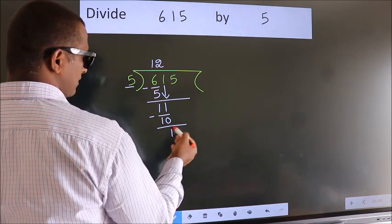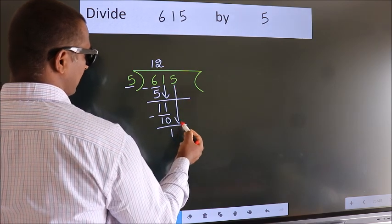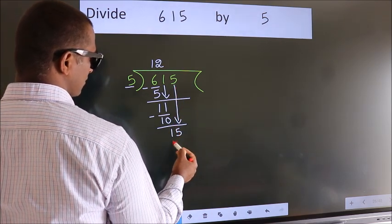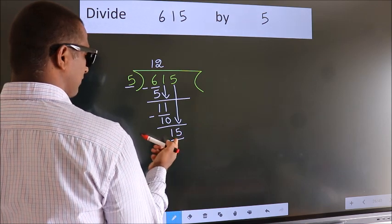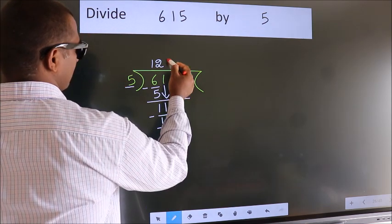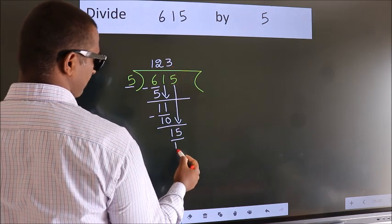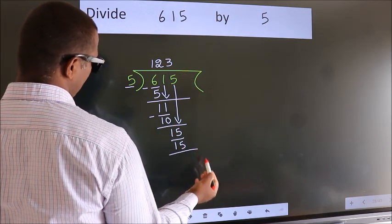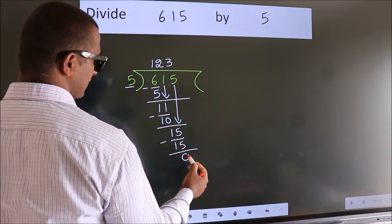After this, bring down the beside number. So, 5 down, making 15. When do we get 15 in the 5 table? 5 times 3 is 15. Now, we subtract. We get 0.